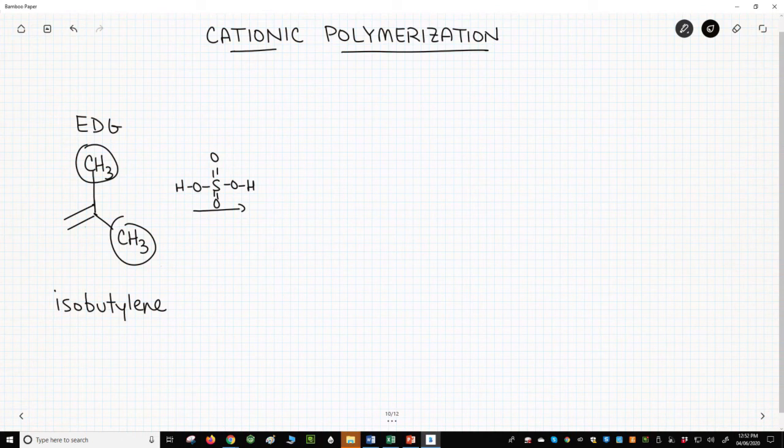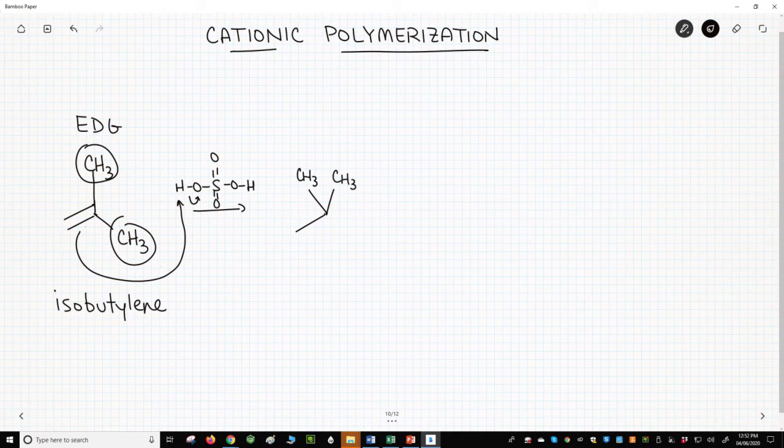For cationic polymerization, we need to make a cation. An easy way to make a cation from an alkene is to add a strong acid. I have chosen sulfuric acid. The alkene will be protonated by the acid to form a carbocation. I'm going to move my methyl groups up top. There's our carbocation.